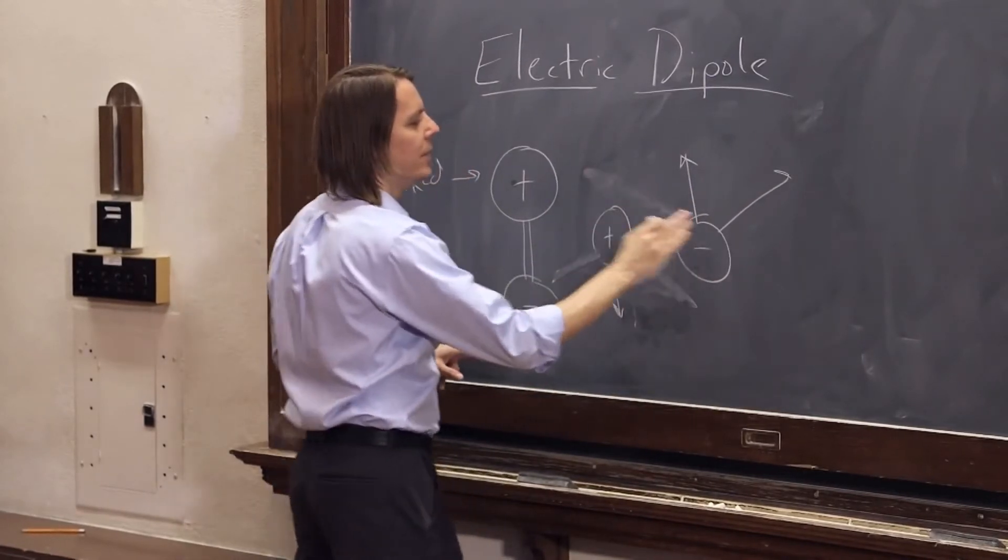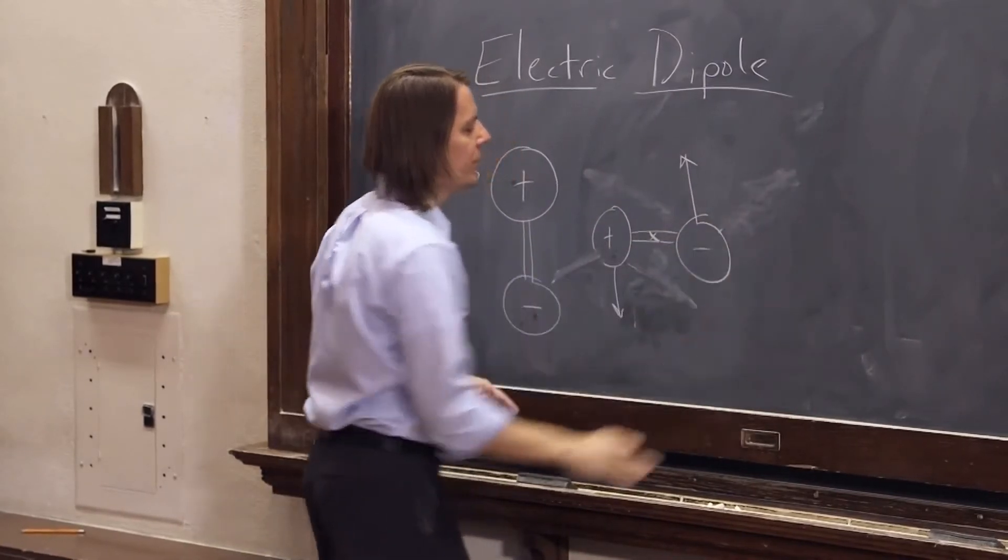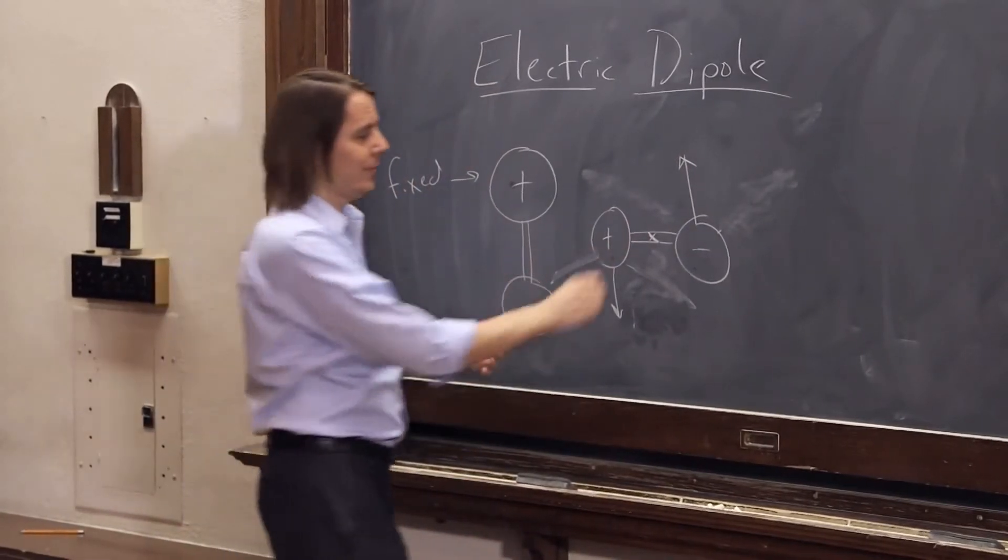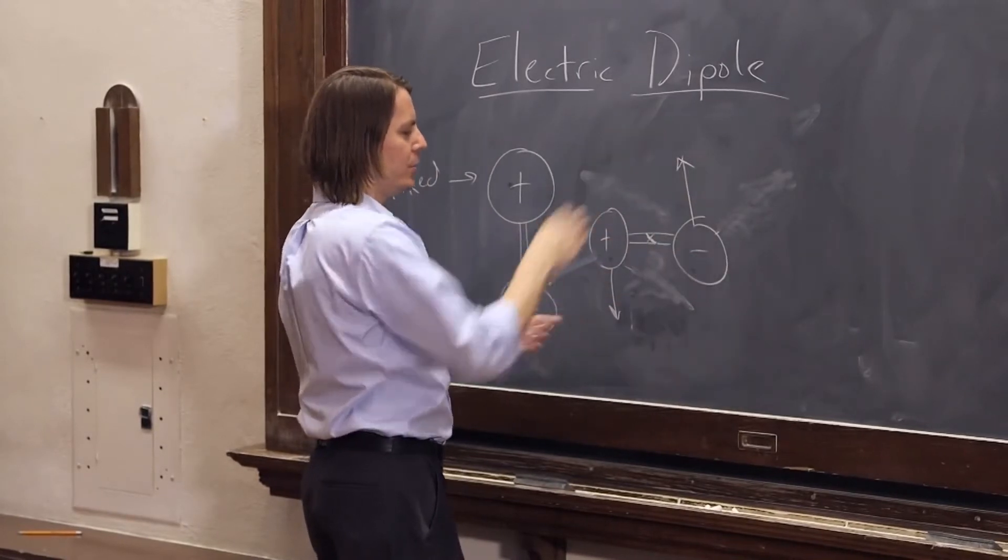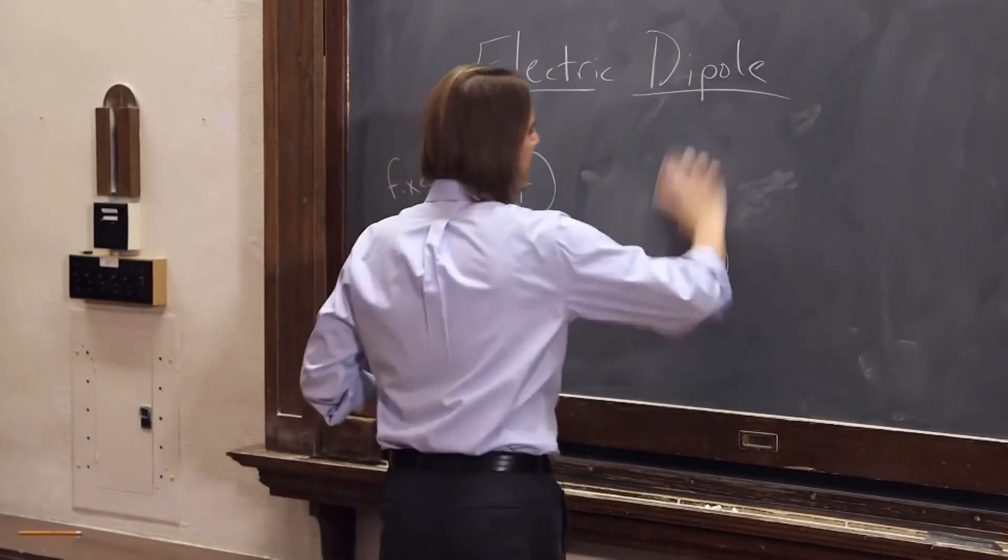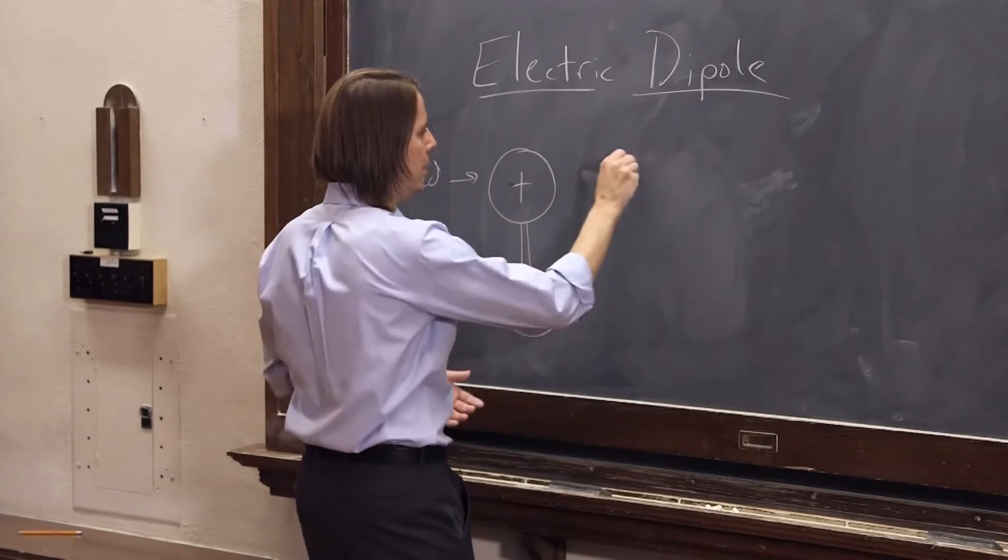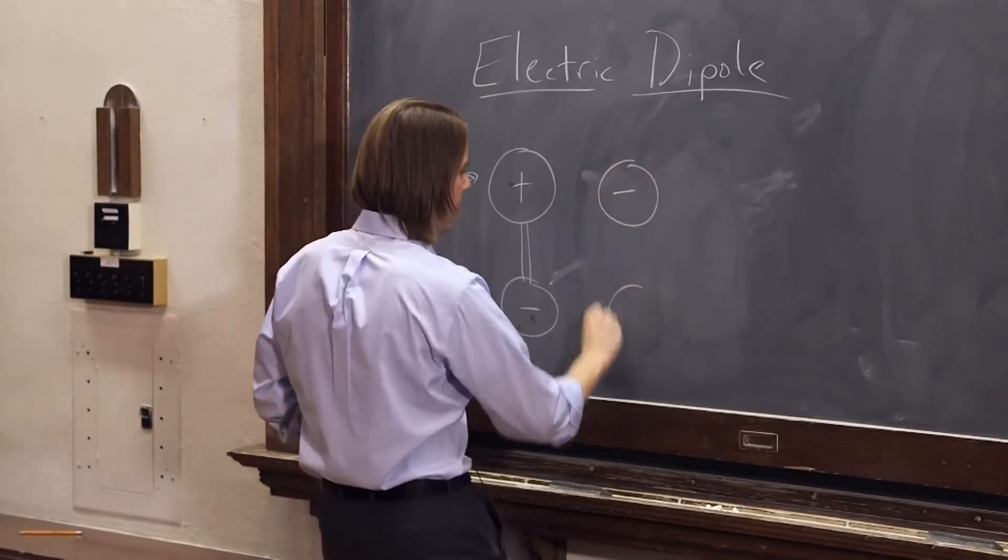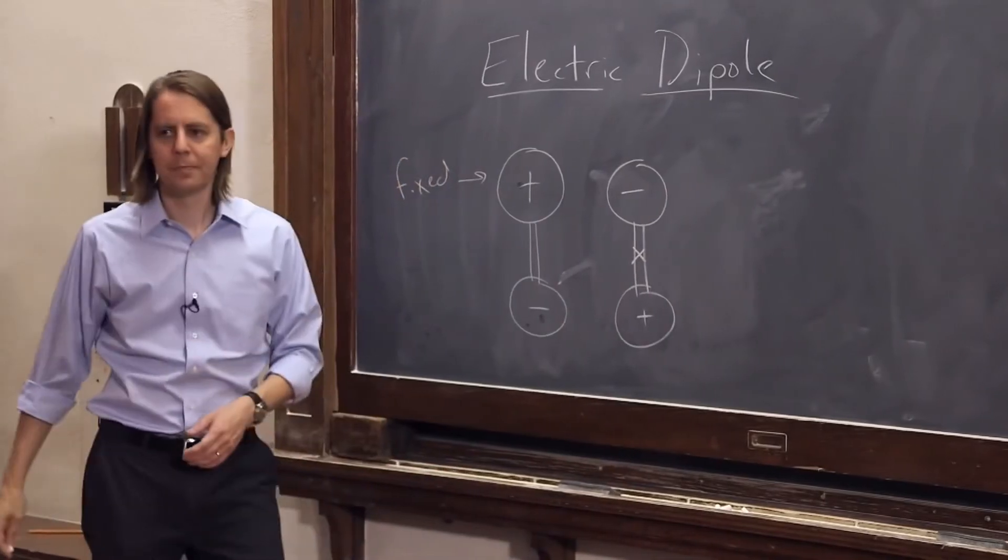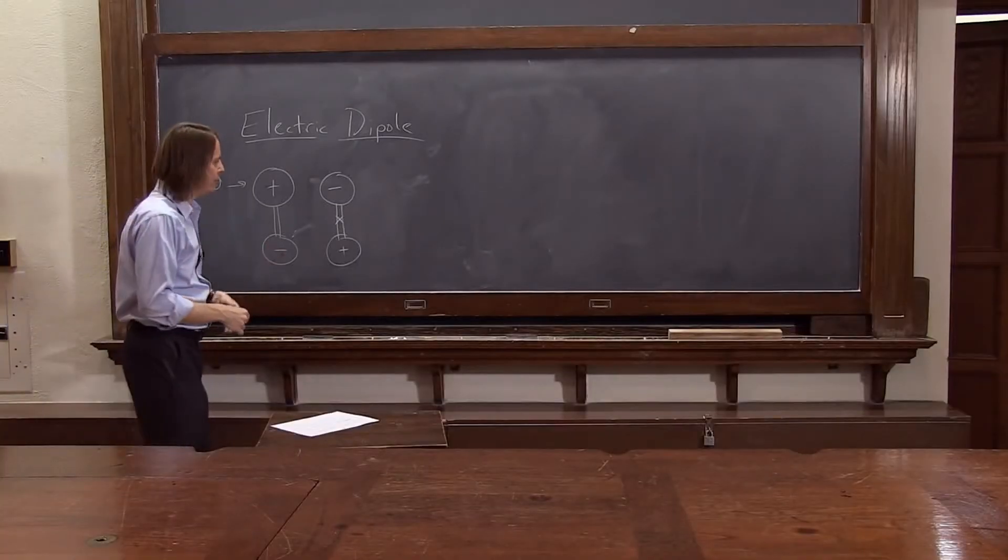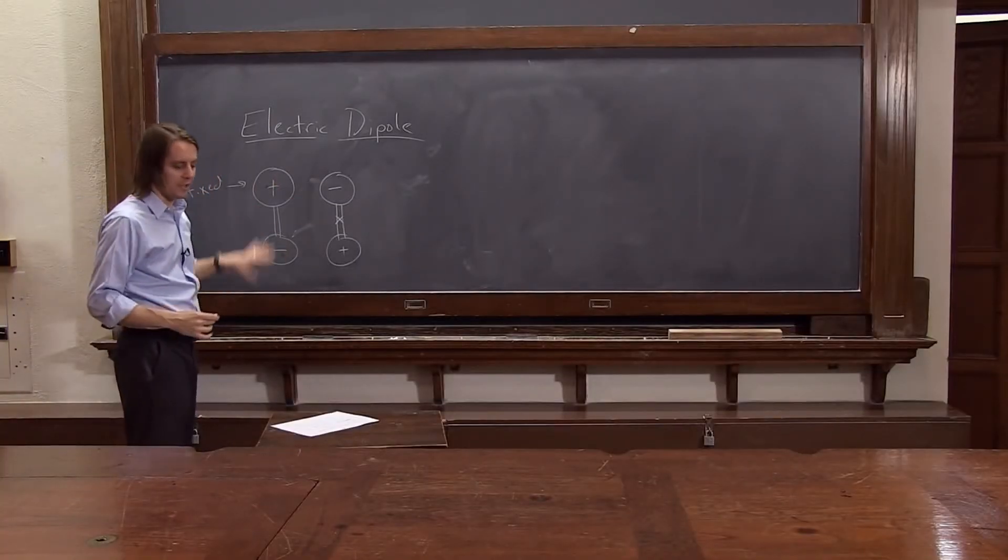So the negative charge would feel a force up. And it's on a pivot point, it's feeling a torque. So it can turn around this point, it's fixed there and rotate. So what it's going to do in the end is it's going to align negative here, positive there on its little pivot point. That's what electric dipoles like to do. This is the lowest energy state.